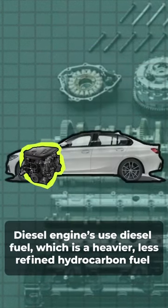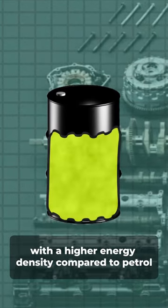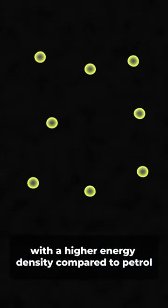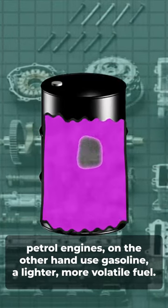Diesel engines use diesel fuel, which is a heavier, less refined hydrocarbon fuel with a higher energy density compared to petrol. Petrol engines, on the other hand, use gasoline, a lighter, more volatile fuel.